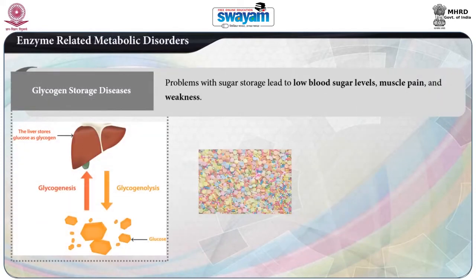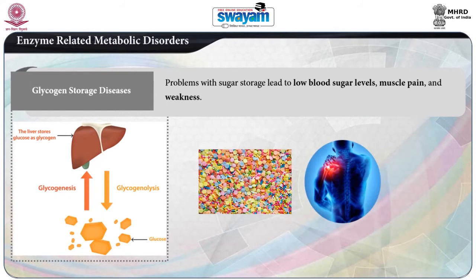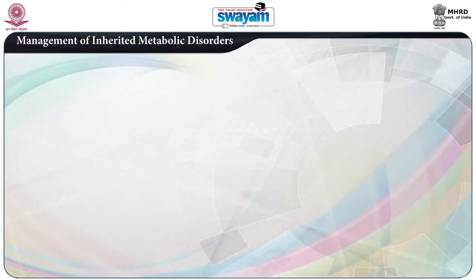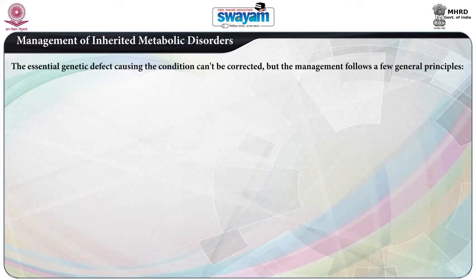The next in order is glycogen storage diseases. Problems with sugar storage may lead to low blood sugar levels, muscle pain, and weakness. Coming to management of inherited metabolic disorders — the essential genetic defect causing the condition cannot be corrected, but the management follows a few general principles.